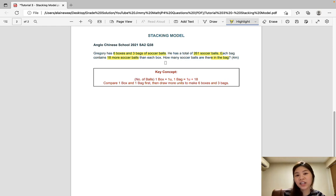Now, the key concept is that in one bag, there are 18 more balls than one box. So let's just compare the number of soccer balls in one bag and in one box first. So in one bag, there are 18 more soccer balls. So we should be drawing one unit plus 18. So let's go ahead and draw one unit, and we cut out a part for the 18 more balls.